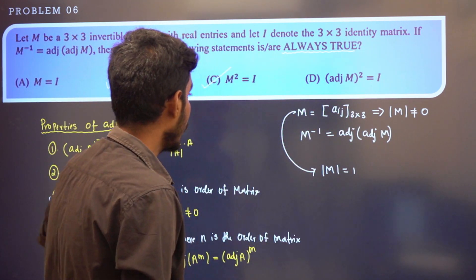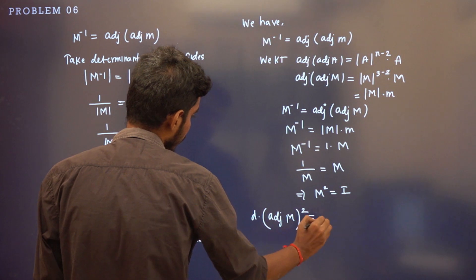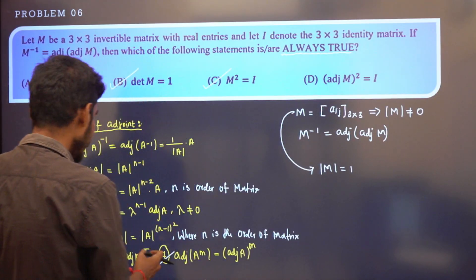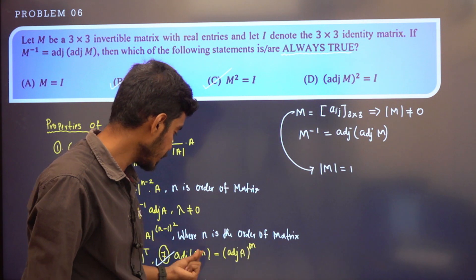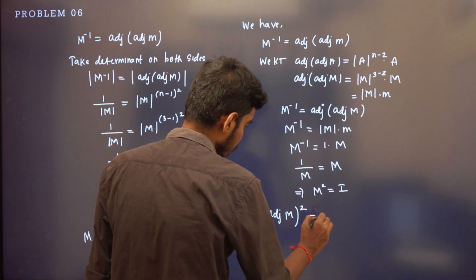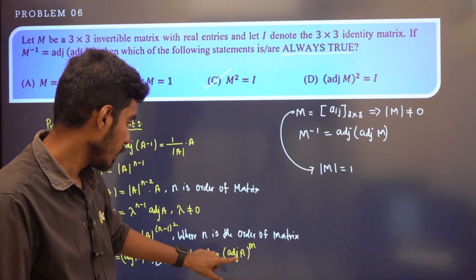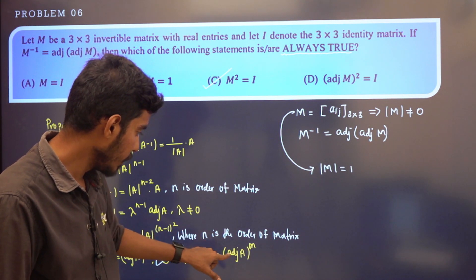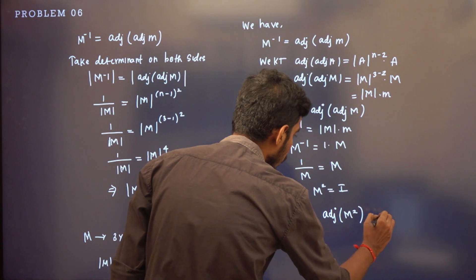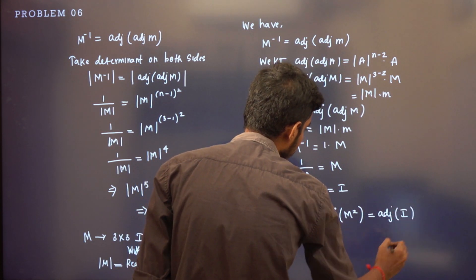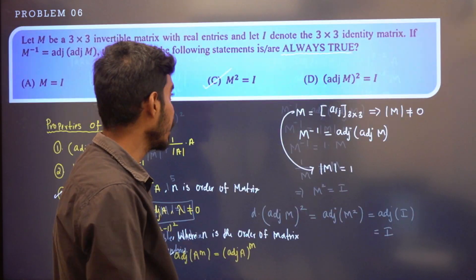Now let's look at adj(M)². Using property 7: adj(M whole square) is the same as adj(M²). And adj(M²) equals adj(I), since M² equals the identity matrix. Adjoint of the identity matrix is again the identity matrix. So adj(M²) = I, which is true.